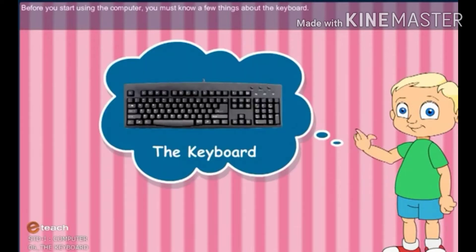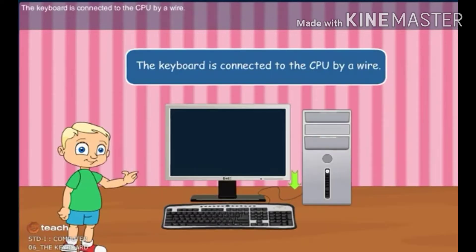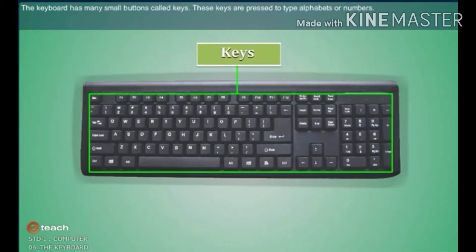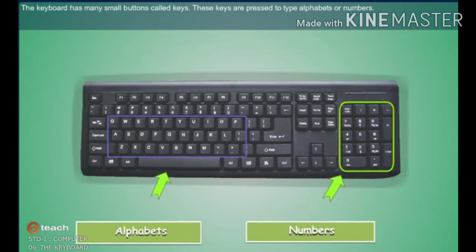Before you start using the computer, you must know a few things about the keyboard. The keyboard is connected to the CPU by a wire. The keyboard has many small buttons called keys. These keys are pressed to type alphabets or numbers.